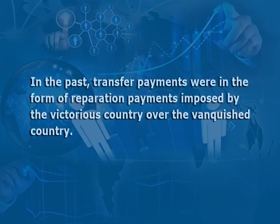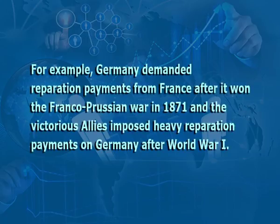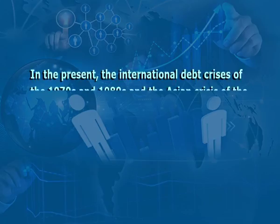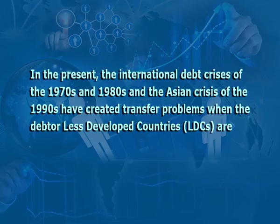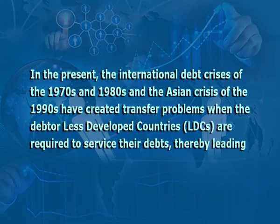The reversal of capital flows forces countries to go from a current account deficit to a current account surplus. In the past, transfer payments were in the form of reparation payments imposed by the victorious country over the vanquished country. For example, Germany demanded reparation payments from France after it won the Franco-Prussian War in 1871, and the victorious allies imposed heavy reparation payments on Germany after World War One.